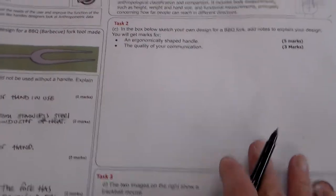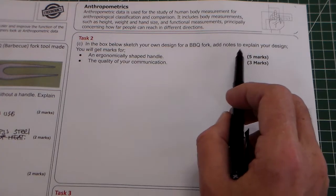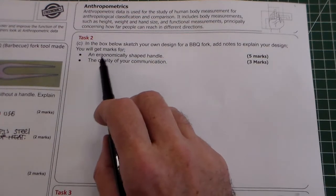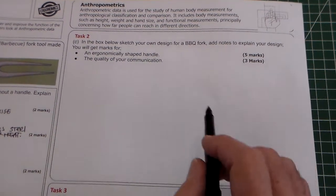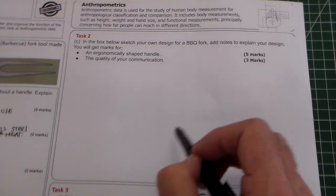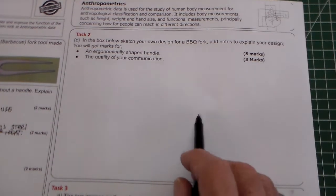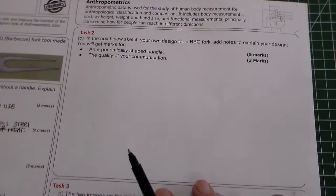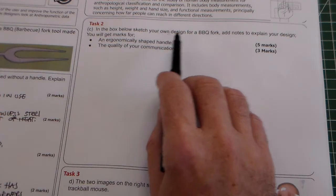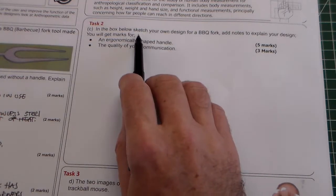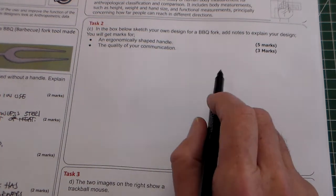Okay, so the next part, part two of this question. It says in the box below sketch your own design for a barbecue fork. Add notes to explain your design. You will get marks for ergonomically shaped handle and quality of your communication. I have actually made another clip about the ergonomics of barbecue tools - I'll try and put a link in the description. For this you need to draw the barbecue fork. It says sketch and notes, so to get these full eight marks you need to include a drawing and annotation.